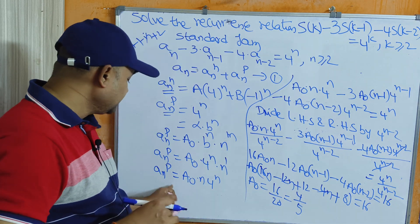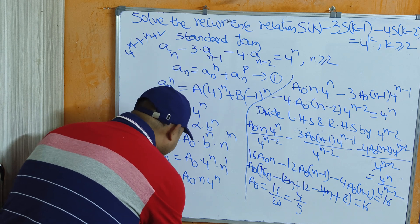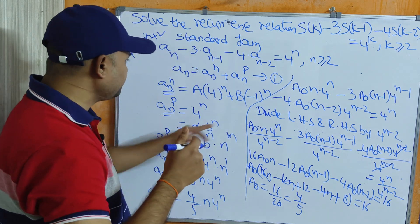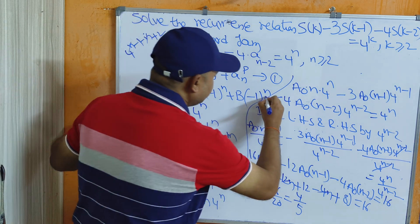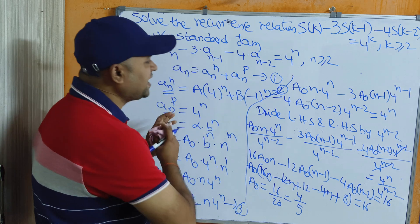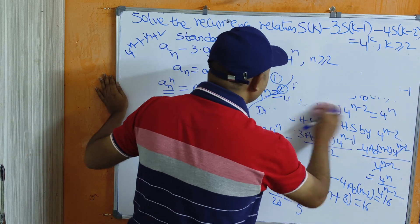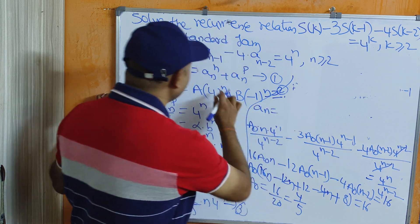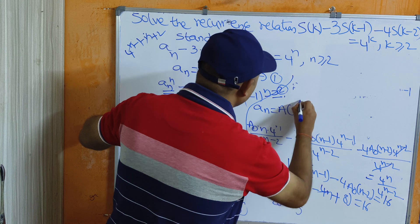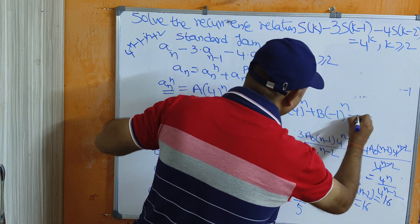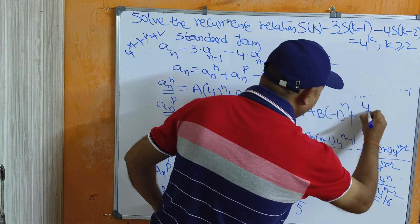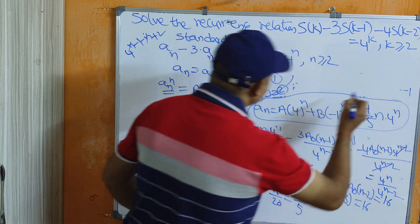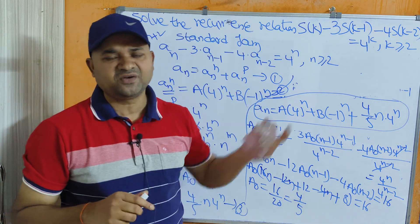Now substituting equation numbers 2 and 3 into equation number 1, the general solution for this problem is: a_n = a·4^n + b·(-1)^n + (4/5)·n·4^n. This is the general solution. Likewise, we can solve any such problem very easily.